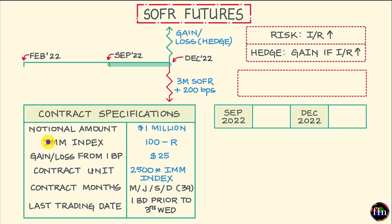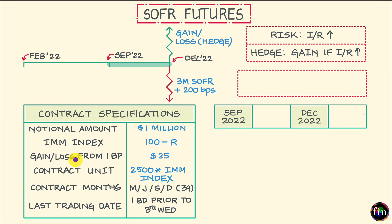IMM stands for International Monetary Market. Now, if this implied three-month SOFR R for the reference quarter were to change by one basis point — that means by 0.01 — then the gain or loss for one three-month SOFR futures contract works out to $25.